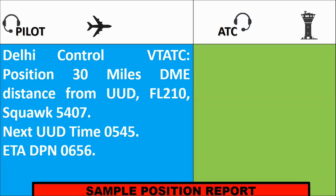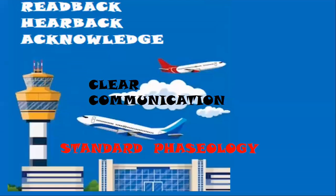Sample position report. An example could be: 'Delhi Control, Victor Tango Alpha Tango Charlie, position 30 miles DME distance from Uniform Uniform Delta, flight level 210, squawk 5407, next Uniform Uniform Delta, time 0545, ETA Delta Papa November 0656.'